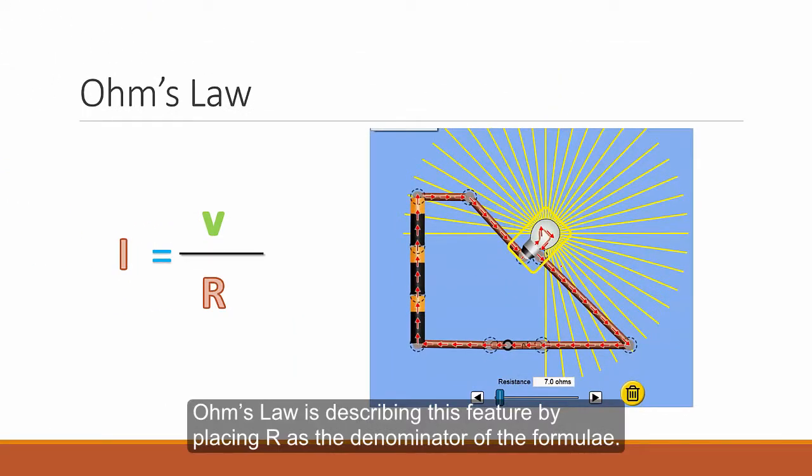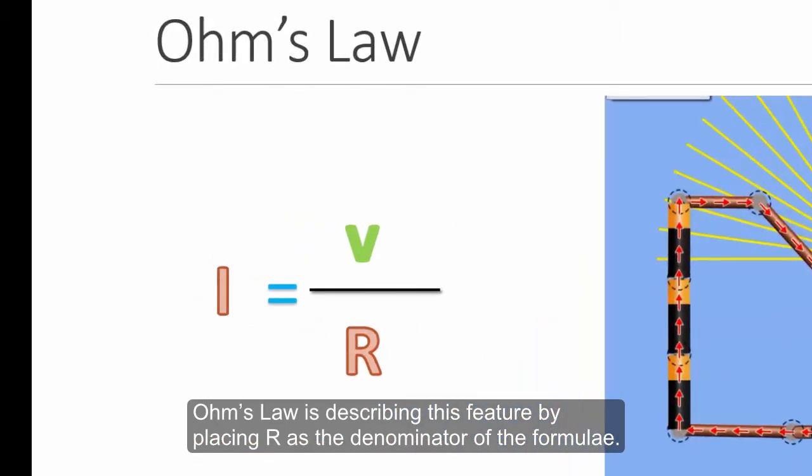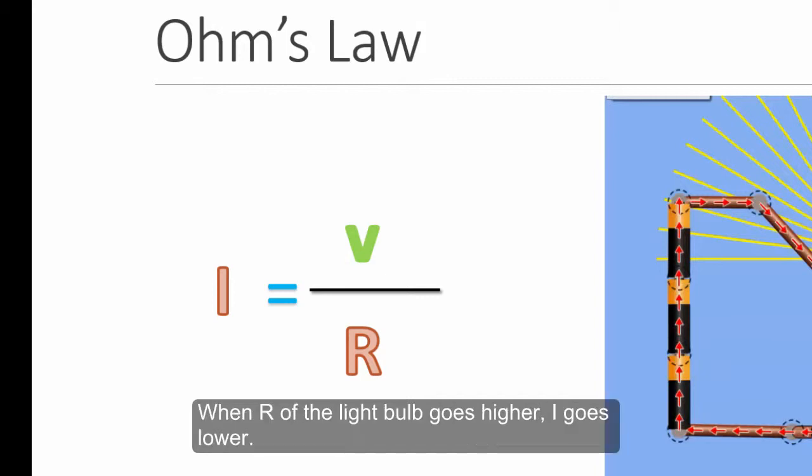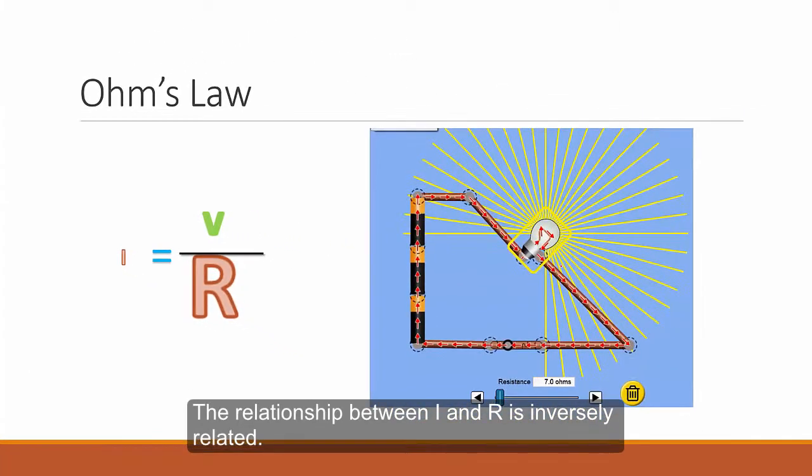Ohm's Law is describing this feature by placing R at the denominator of the formula, assuming that V remains unchanged. When R of the light bulb goes higher, I goes lower. The relationship between I and R is inversely related.